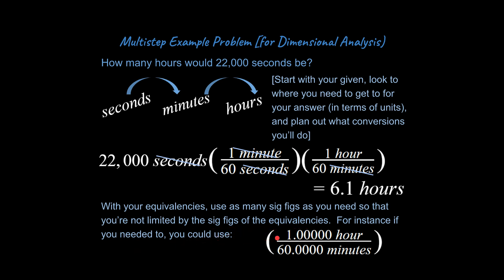So, for instance, if you needed to, you could write 1.00000 hour is divided by 60.0000 minutes. And that's because the actual definition of an hour is exactly 60 minutes.